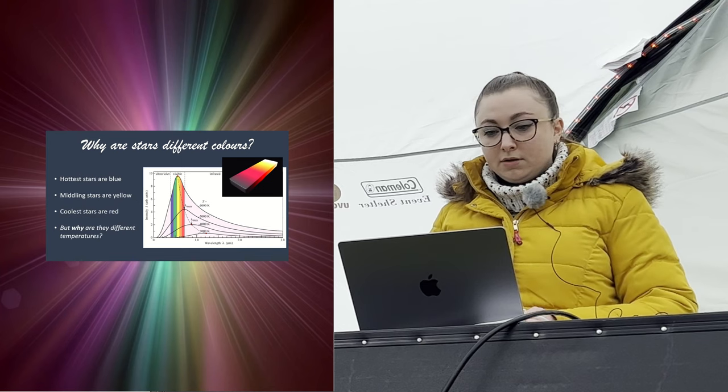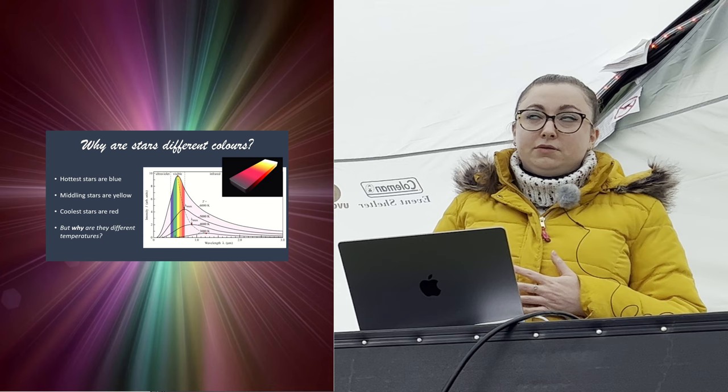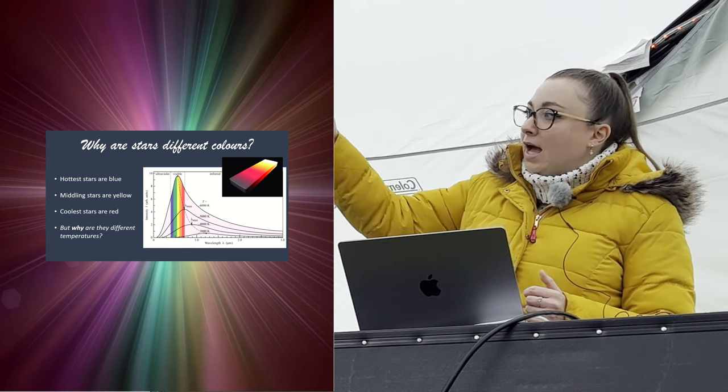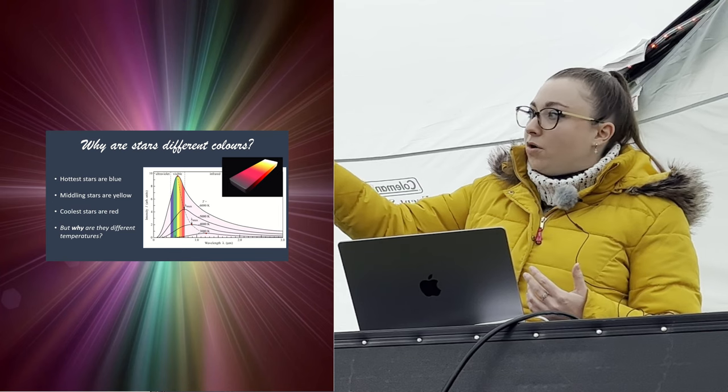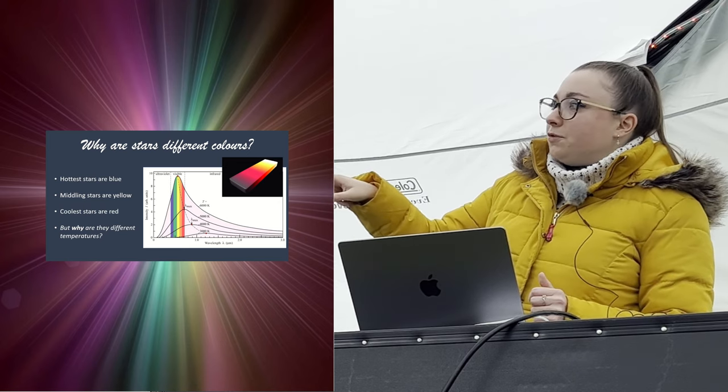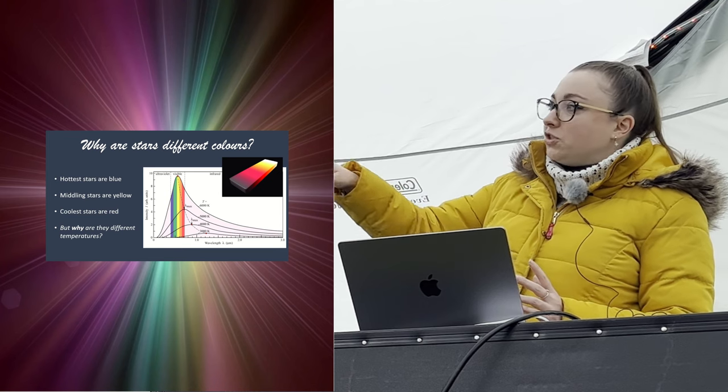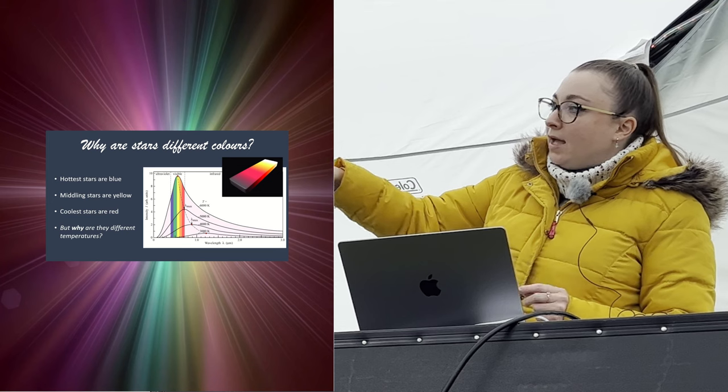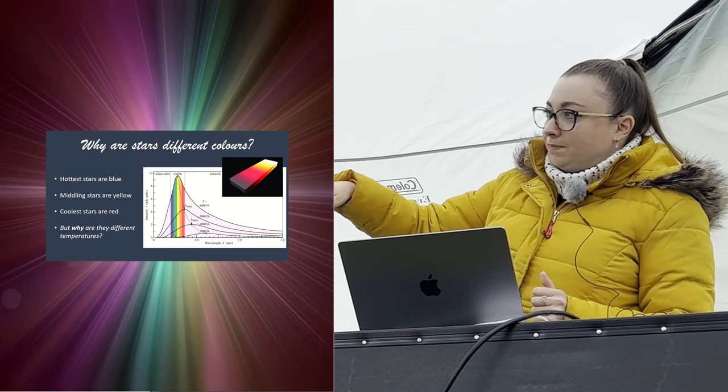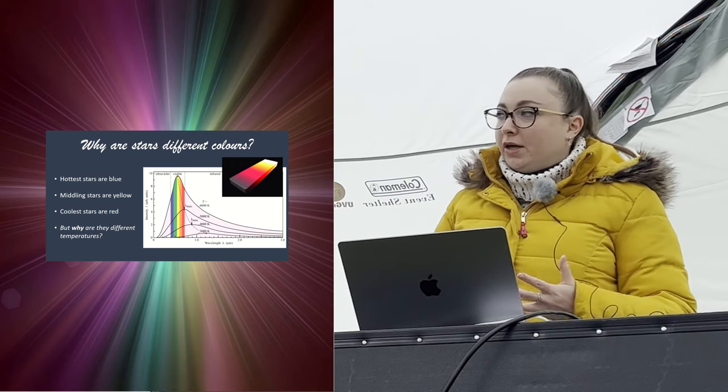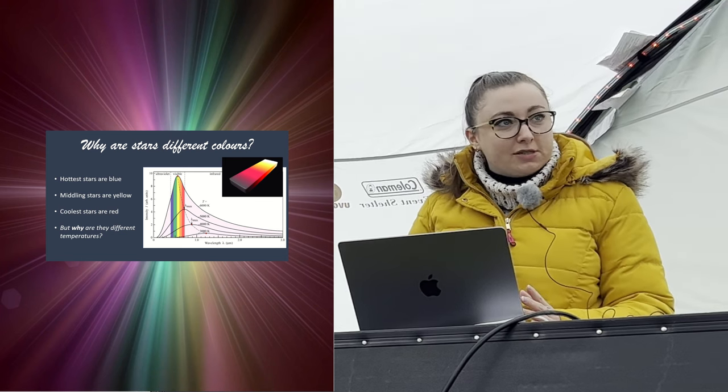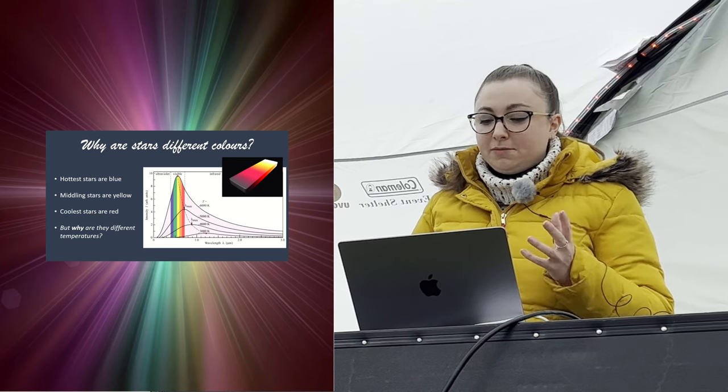Hotter stars appear blue. Middling stars like the sun are sort of yellowy, like Capella. The cooler stars are red. This is reflecting their black body. As they're cooler, they're peaking most of their emission at longer and longer wavelengths, and that's why they're different colors. For example, the sun is about 6000 degrees, that's the big peak here at the top. A cooler star that's 1000 degrees cooler, you can see the peak wavelength is in the red part of the spectrum. By and large, that is why different stars are different colors, because of their surface temperature. But why would they be different temperatures? That's the key question.